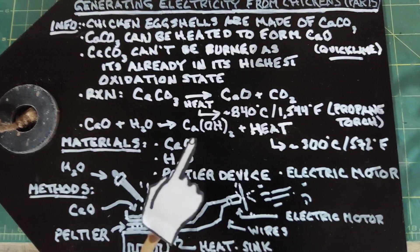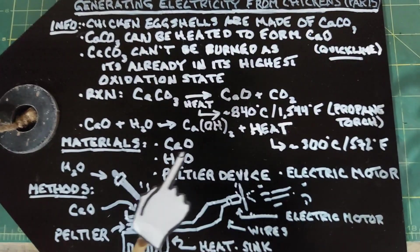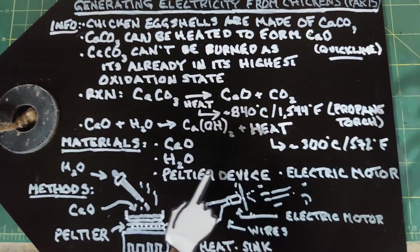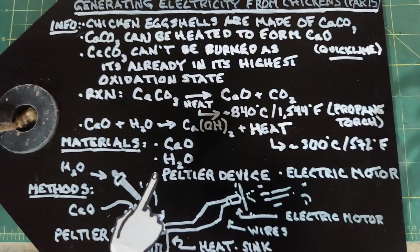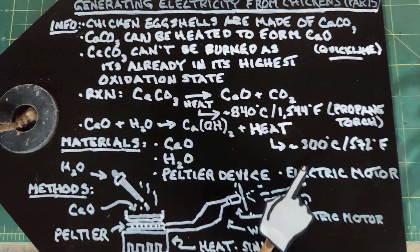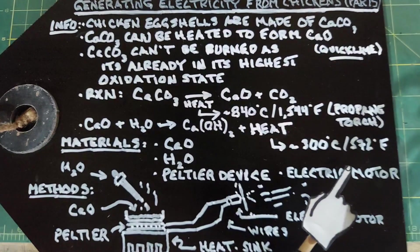For our materials, we have calcium oxide which we're going to make, water, and here's something new, a Peltier device, and we're going to go over this more, and an electric motor just to prove we're actually producing electricity.